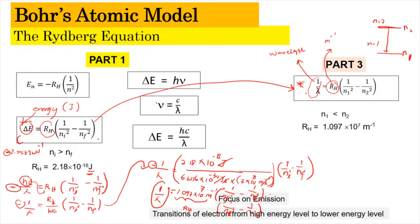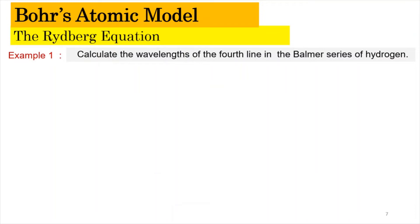These equations are interdependent — it's not something you just memorize; there is a real connection. Now let's look at an example. Example one: calculate the wavelength of the fourth line in the Balmer series of hydrogen. We need to find the fourth line of the Balmer series, and we can understand this using the energy level diagram.